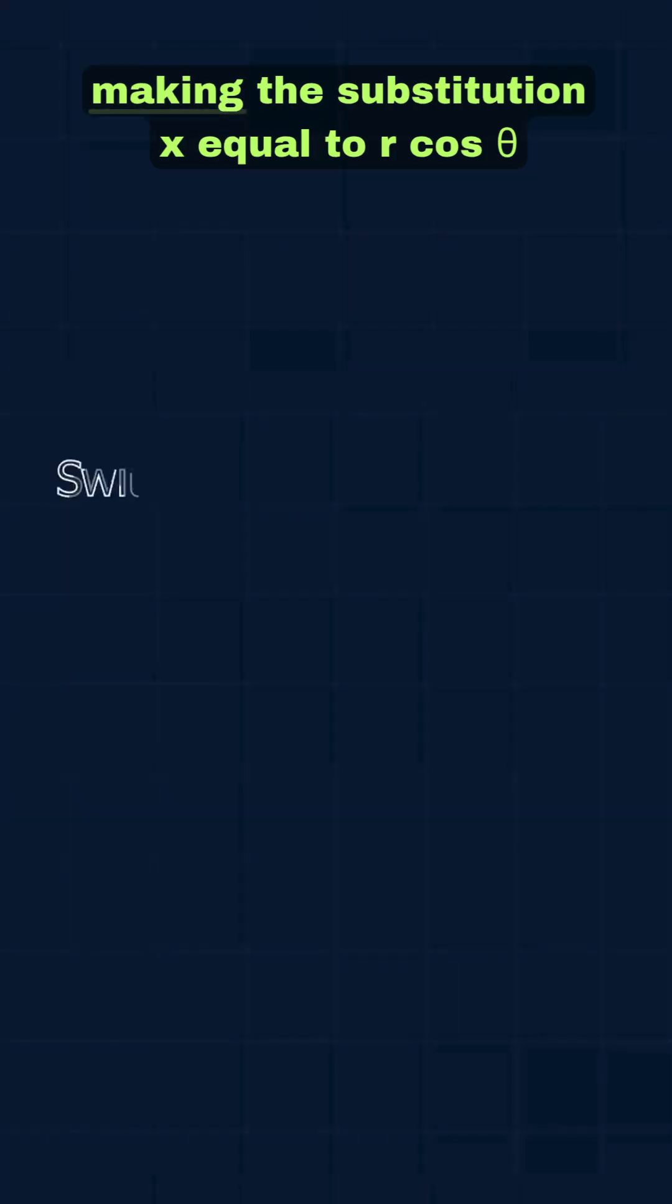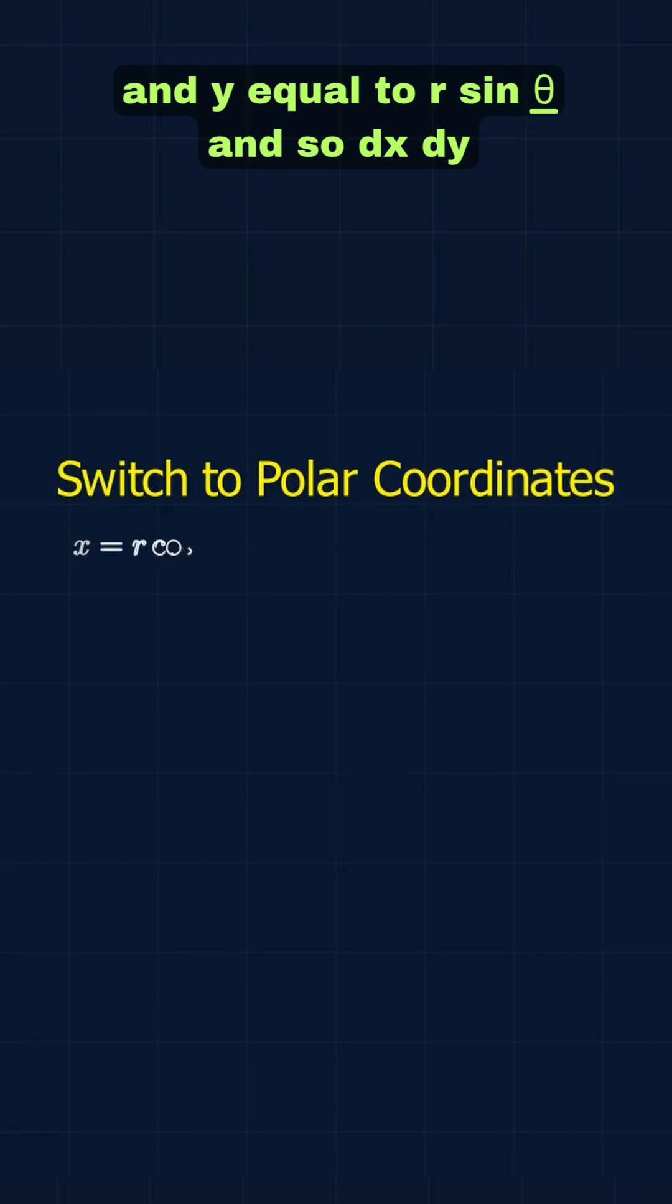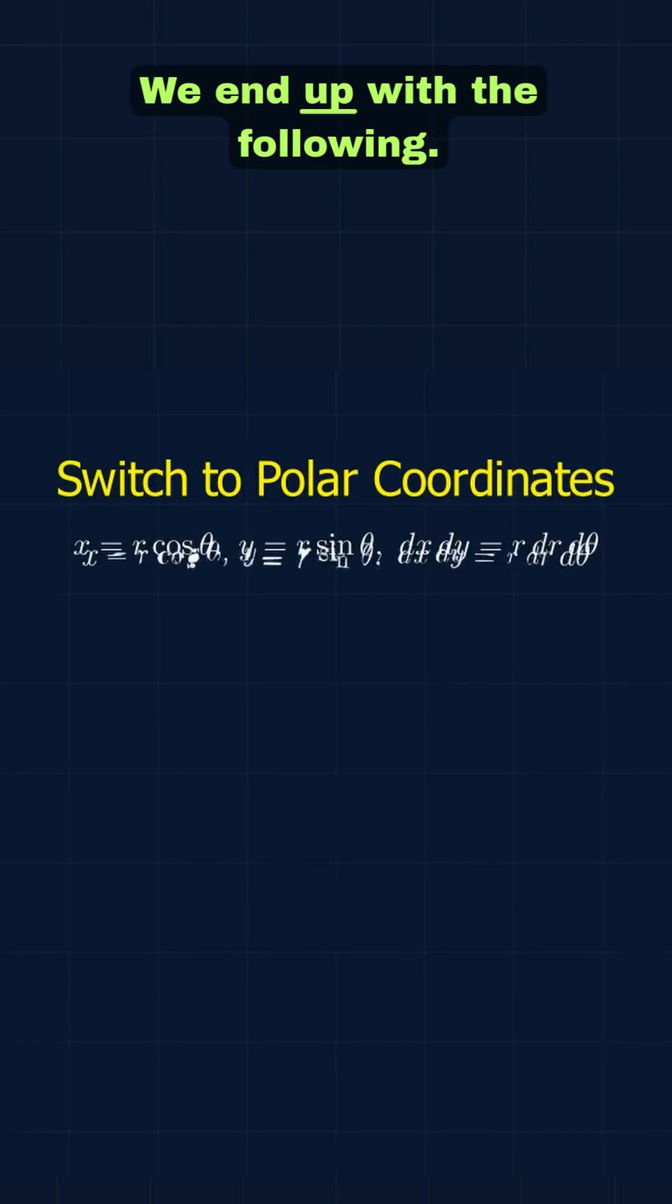Now we'll switch to polar coordinates. Making the substitution x equal to r cos theta and y equal to r sin theta and so dx dy equals to r dr d theta. We end up with the following.